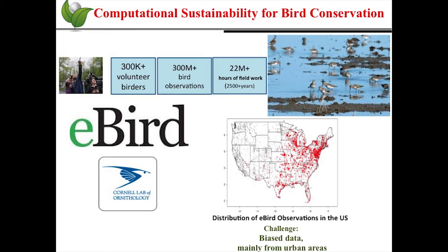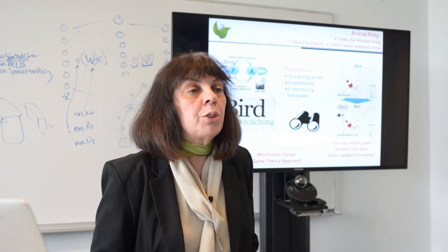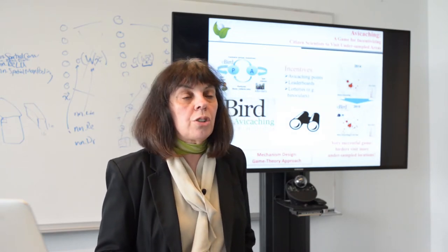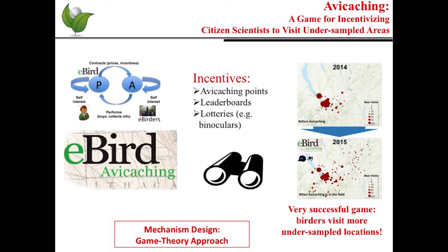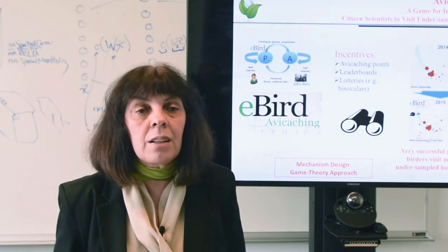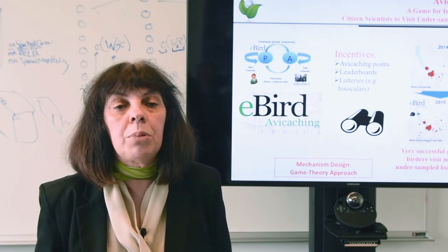This is exciting, but the challenge is that the data are often biased, mainly from urban areas. To incentivize birders to visit under-sampled locations, we developed a game called avicaching, using game theory. Birders accrue avicaching points toward a lottery for binoculars and other prizes. The points are assigned to locations based on the birders' behavior to induce a more uniform distribution of bird observations. This has been a very successful game, shifting birders to under-sampled locations.